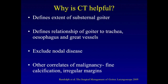CT scanning is helpful to determine the extent to which the goiter extends substernally and the relationship of the goiter to surrounding viscera, including trachea, esophagus, and great vessels. It is also helpful in identifying correlates of malignancy, including patients with nodal disease in the neck as well as patients where the margin of the goiter is irregular or hazy.